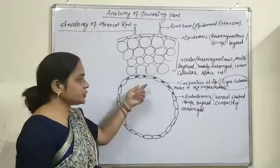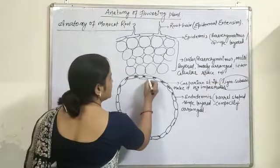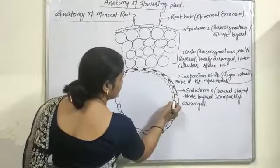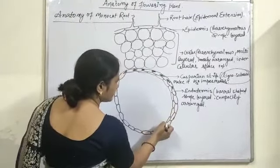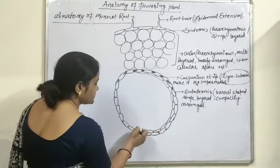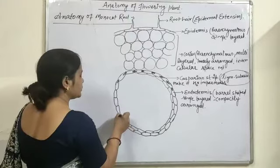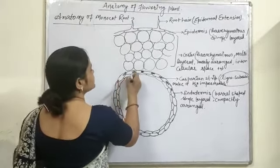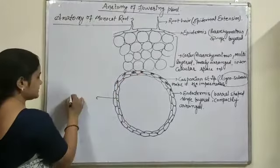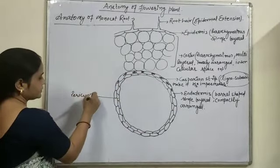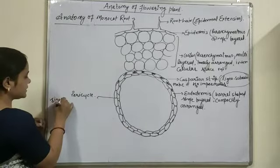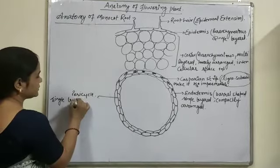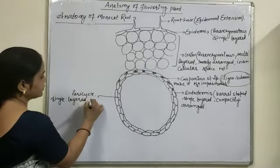Inner to this endodermis, there are 1 to 3 layers of the pericycle region. This pericycle region is inner to the endodermal layer, and it is single-layered, maybe 2 or 3 layers, and parenchymatous.